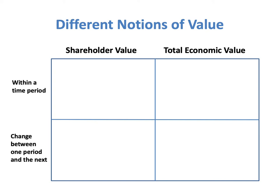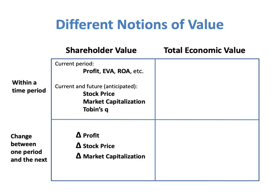In these papers, we distinguish between shareholder value and total economic value, and between measures of value within a given time period and measures of value based on the change between one time period and the next. Measures of shareholder value within a given time period include profit, return on assets, and the firm's stock price, while measures of change would be the change in those measures — for example, the change in profit or the change in stock price.